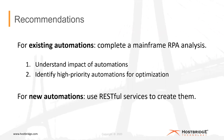Our recommendation for existing automations is to complete what we call a mainframe RPA analysis — that will help you understand the impact and identify high-priority automations to optimize. For new automations, consider some kind of a RESTful or API-based service as the boundary between the RPA platform like Blue Prism and your mainframe. We hope you would look at us, but even if you don't, my advice would be the same: if you're doing production-level work at scale and volume, please find a way to avoid terminal emulation and screen scraping as the integration technique from the RPA platform to the mainframe.